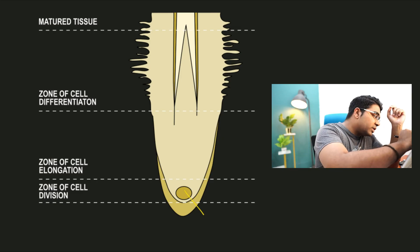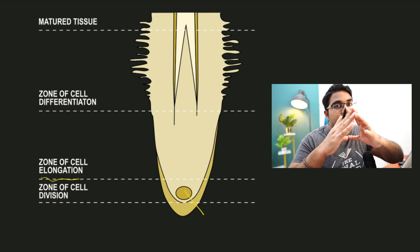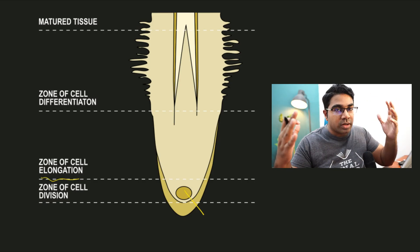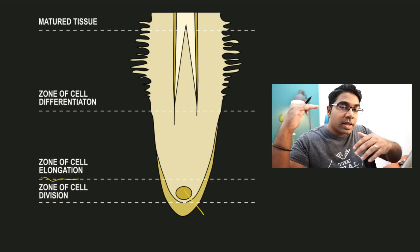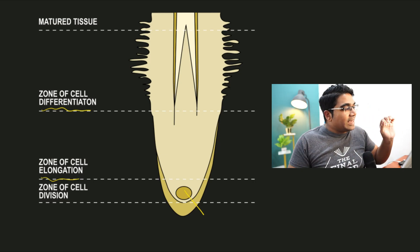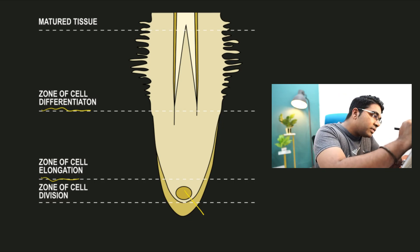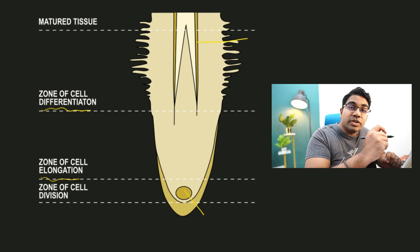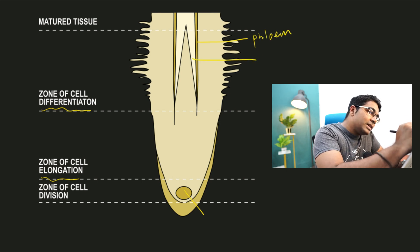Once the number of cells increases, we enter the zone of cell elongation, where the size of the cells becomes bigger through vacuolation. Once the size has reached an optimum level, we go into differentiation, where cells become specialized. In the root's zone of differentiation we once again have vascular tissue — the phloem on the outside and the xylem on the inside.